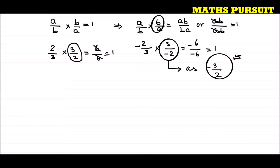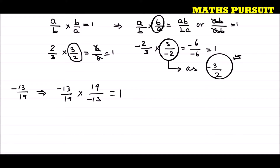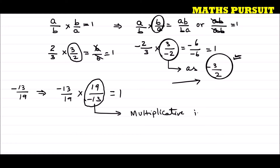Now, after understanding the definition and examples, let us find out the multiplicative inverse of minus 13 upon 19, which the question asked us. The multiplicative inverse of minus 13 upon 19 would initially appear as 19 upon minus 13, since multiplying them gives 1. But as explained, we should instead say the multiplicative inverse of minus 13 upon 19 is minus 19 upon 13.